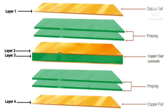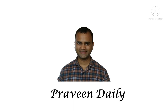Traces are the electrical connections on the PCB. In multi-layer PCBs, electrical connections between the layers are made through holes that are drilled on the PCB. Cores are basically made up of prepegs and copper foils that have been laminated and cured.